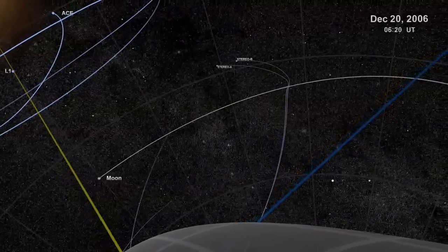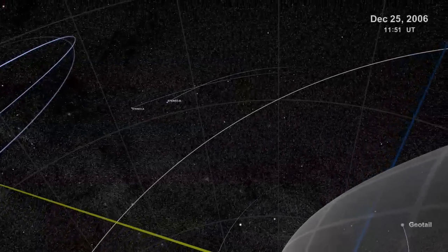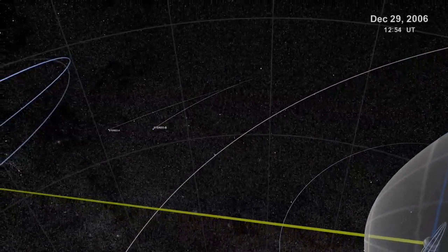Why? The two stereo satellites will deliver 3D pictures of the sun, similar to the way your two eyes perceive 3D.